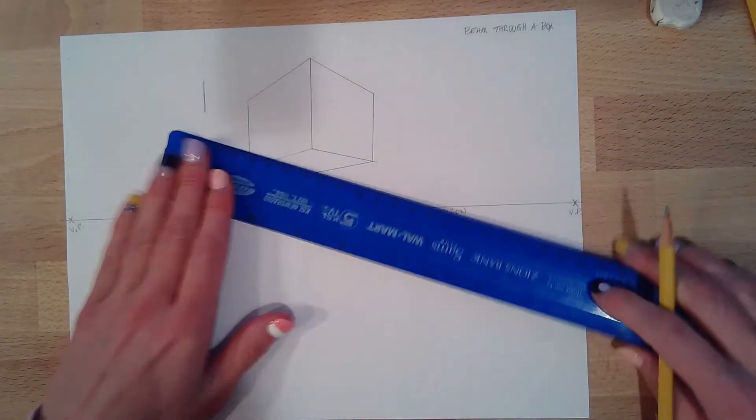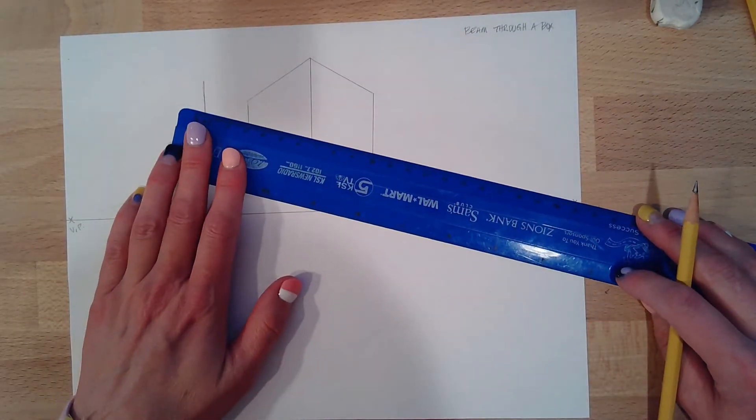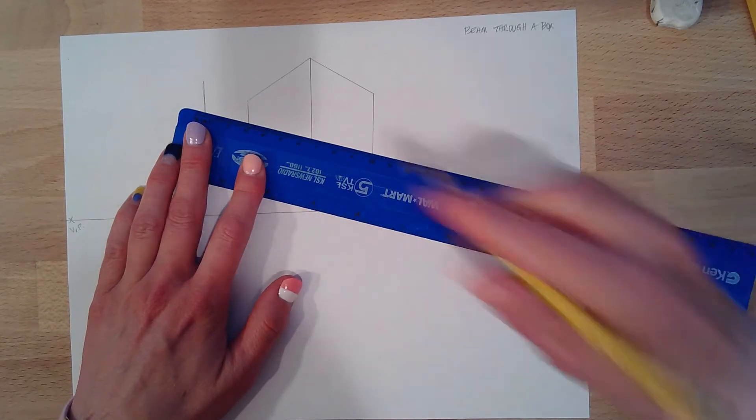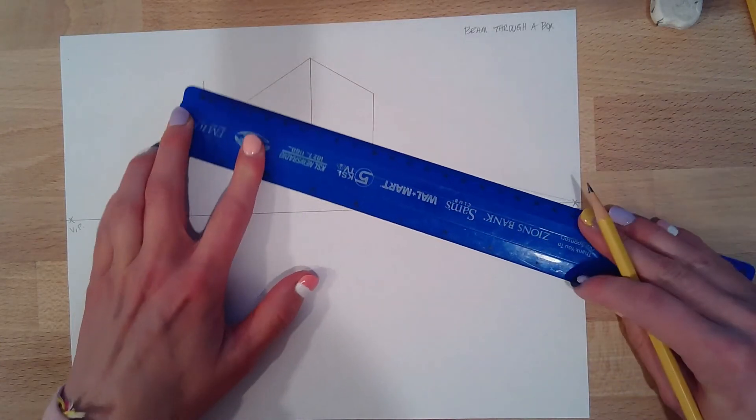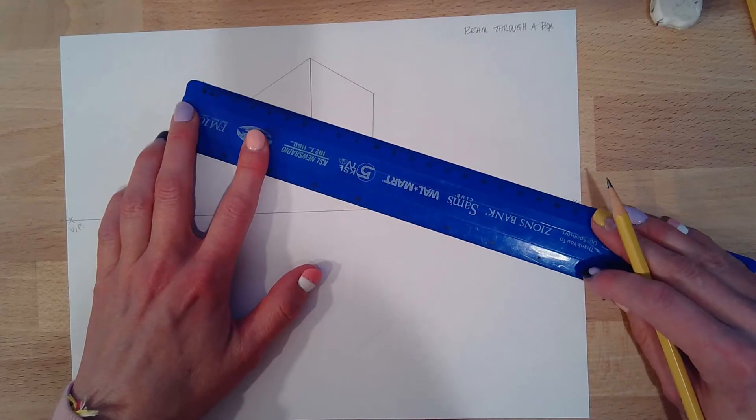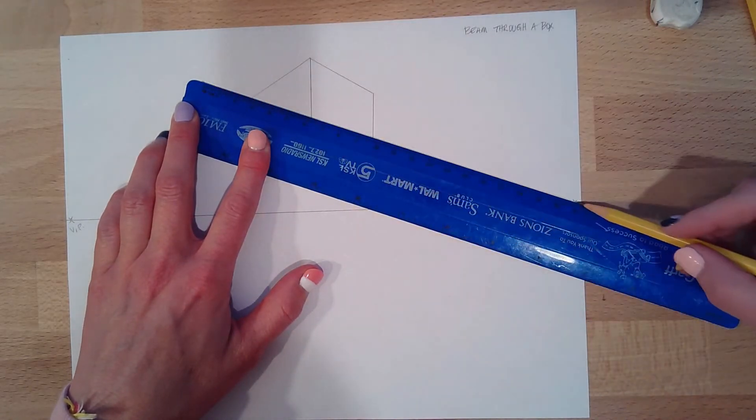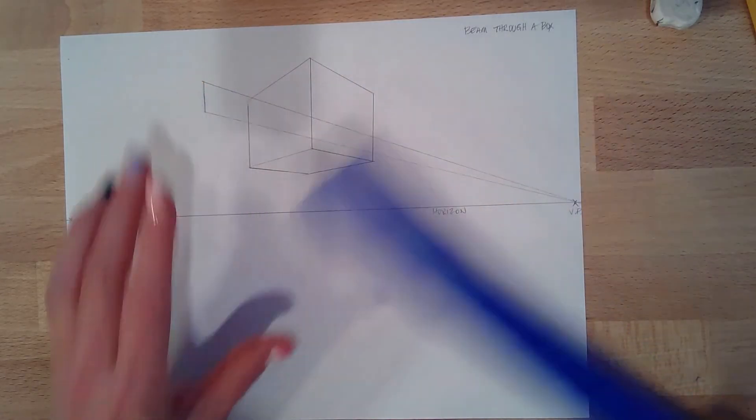So then I'm going to draw really light through my box all the way through it, because I am definitely going to need to erase some lines. I'm going to look at it and say, yeah, I'm happy with that.